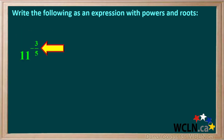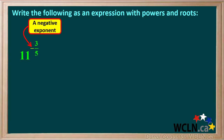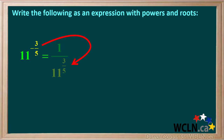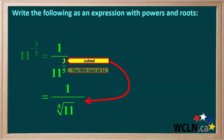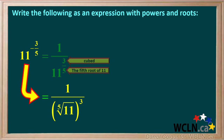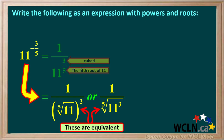Here's another example. We're asked to write 11 to the power of negative 3 fifths as an expression with powers and roots. Notice we have a negative exponent — remember, a number with a negative exponent means its reciprocal with a positive exponent. So 11 to the negative 3 fifths is just 1 over 11 to the positive 3 fifths. The 5 in the denominator of the exponent means the 5th root of 11, and the 3 in the numerator means the 5th root of 11 is cubed. So 11 to the power of negative 3 fifths is 1 over the 5th root of 11 cubed, which can also be written as 1 over the 5th root of 11 cubed. Both expressions are equivalent and correct.